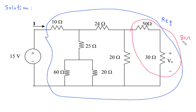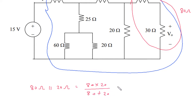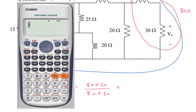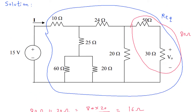Now this 80 Ohm and 20 Ohm are in parallel. So 80 Ohm parallel with 20 Ohm: 80 into 20 by 80 plus 20, which gives 16 Ohm.